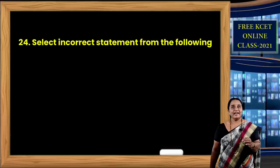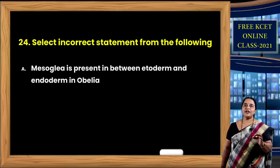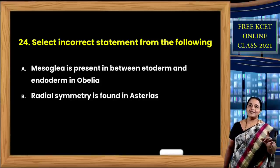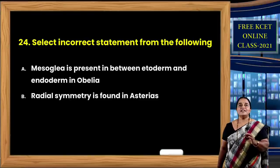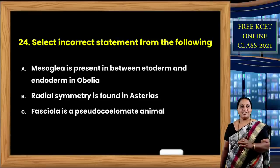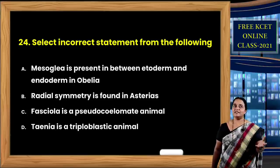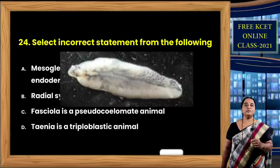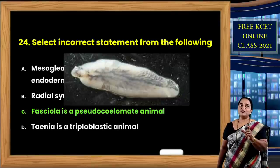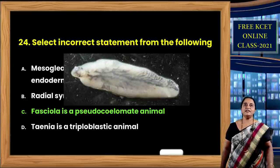Question 24: Select the incorrect statement. Mesoglia is present between ectoderm and endoderm in Obelia — correct statement. Radial symmetry is found in Asterias (starfish, Echinodermata) — correct. Fasciola is a pseudocoelomate animal — this is incorrect, because Fasciola is a liver fluke, a flatworm (Platyhelminthes) — it is acoelomate, not pseudocoelomate. Taenia is a triploblastic animal — correct. So incorrect statement is C.